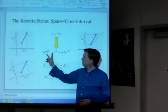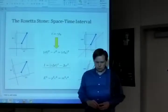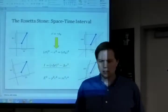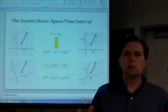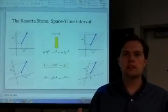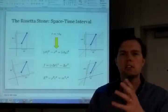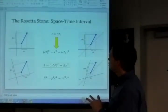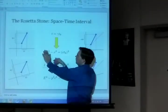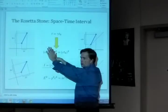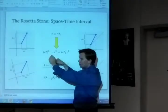This tells us that there is a relationship between the way in which space and time change. They change together. They change in such a way to maintain this constant here. So if the time increases, the X, the distances, have to decrease.